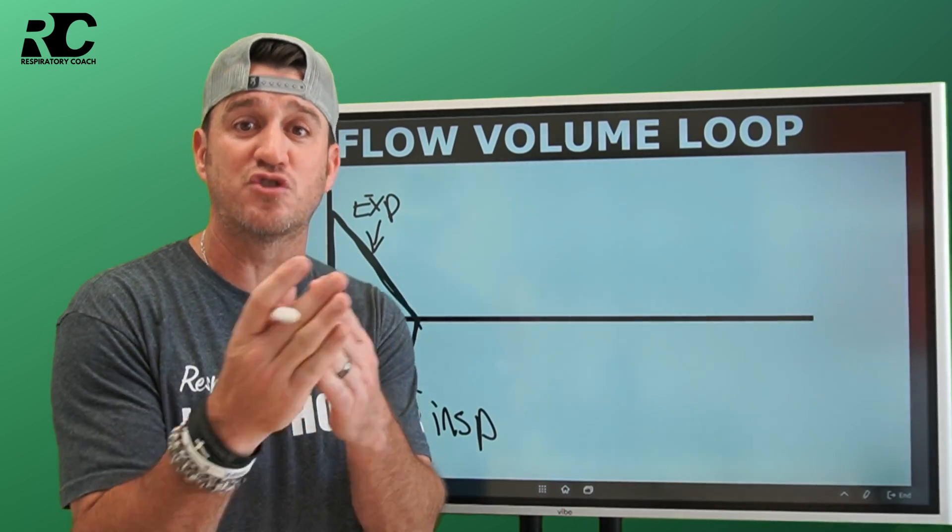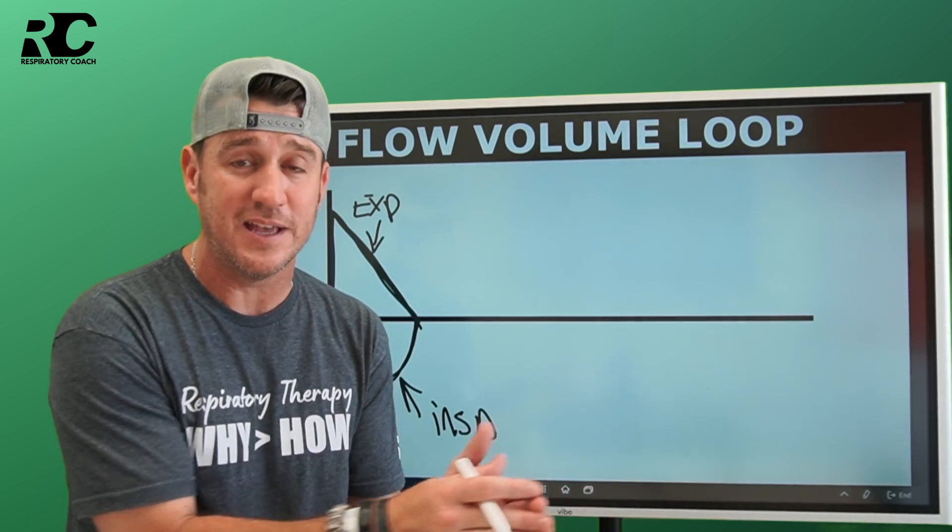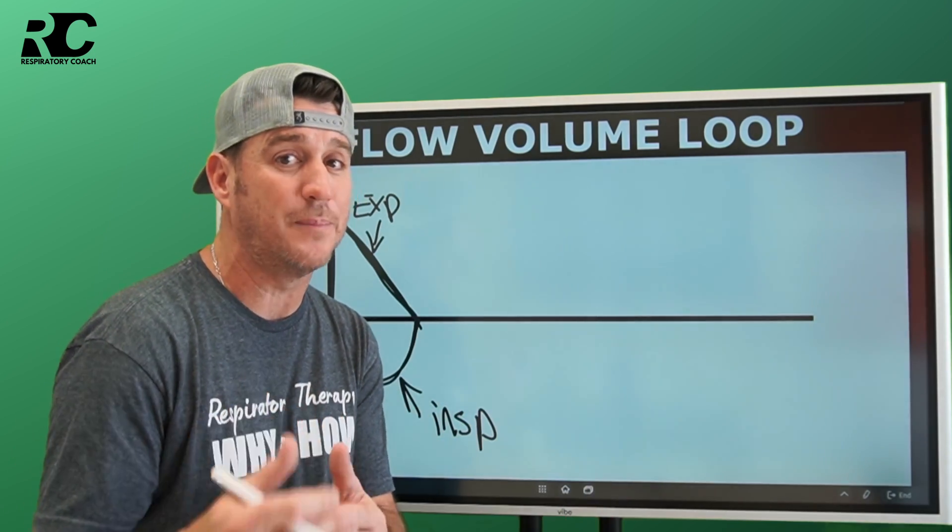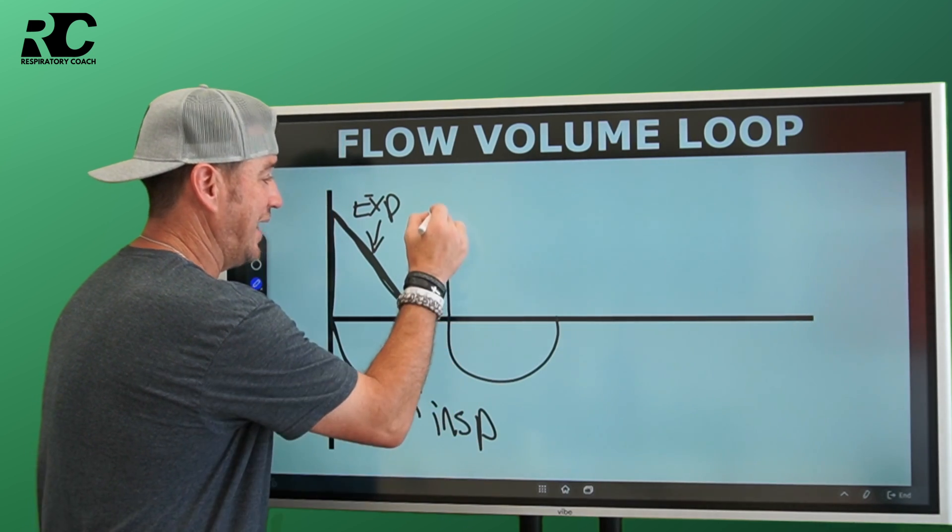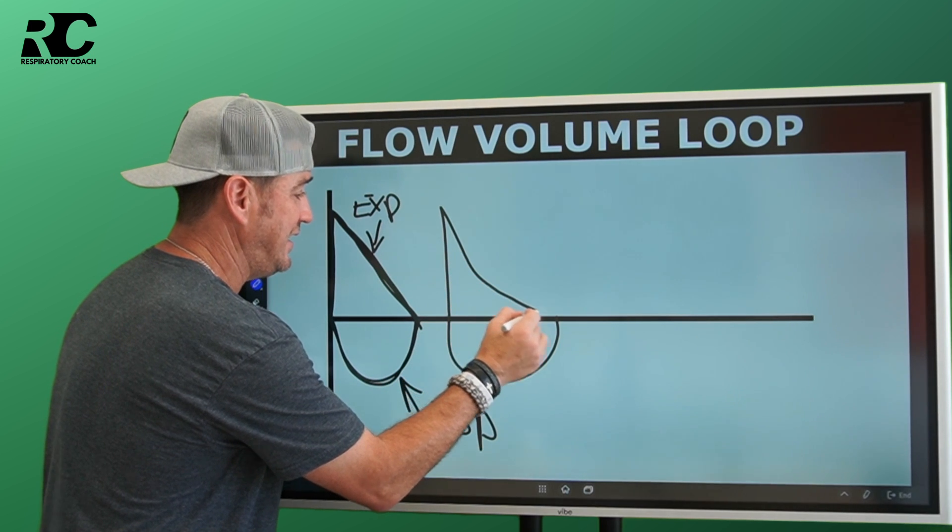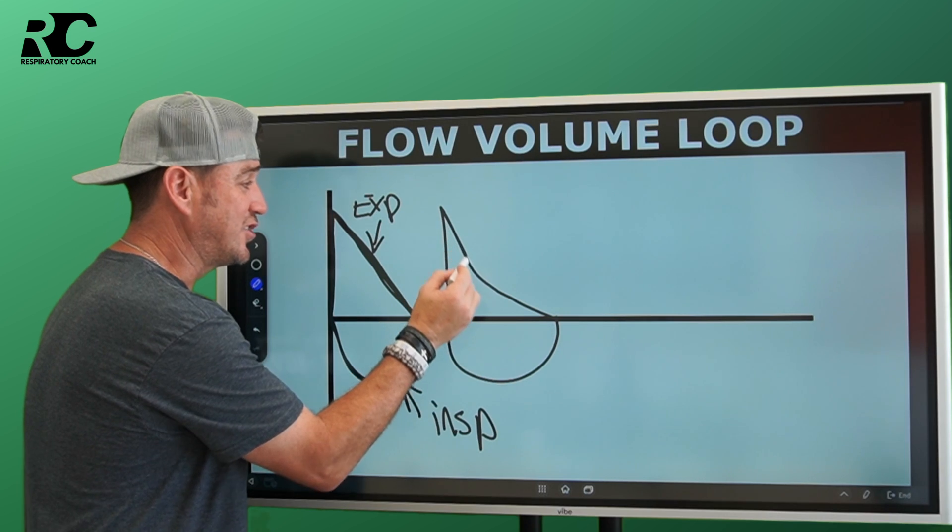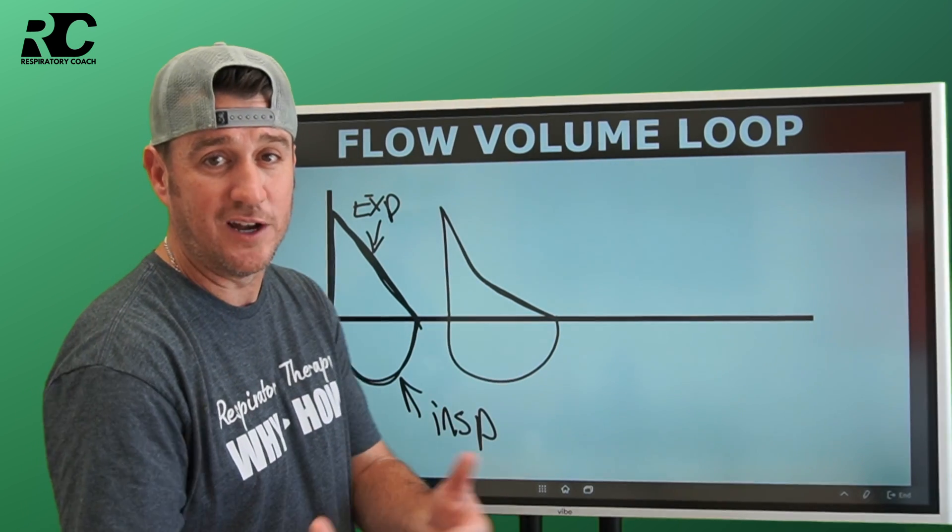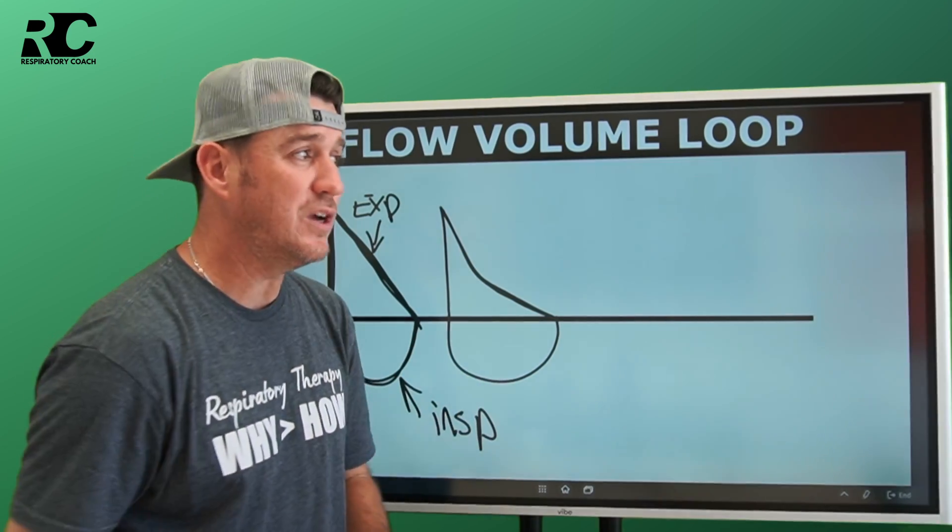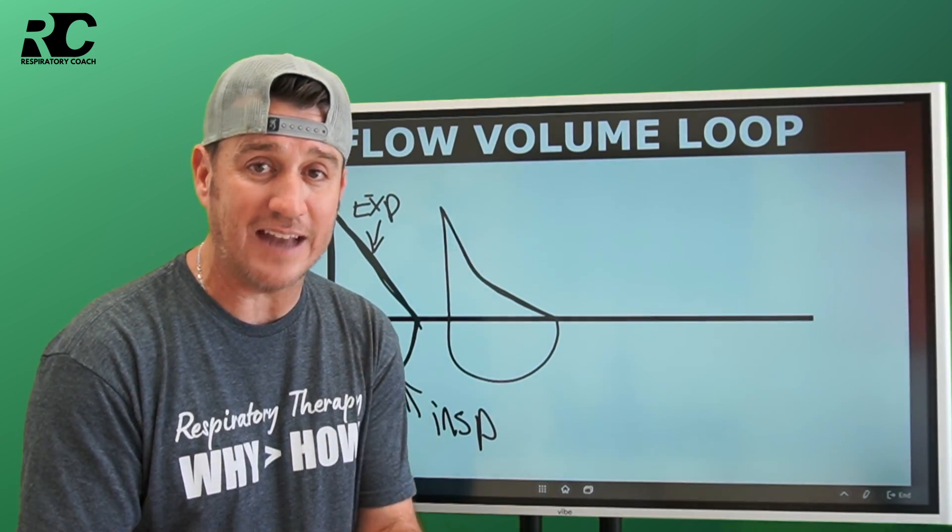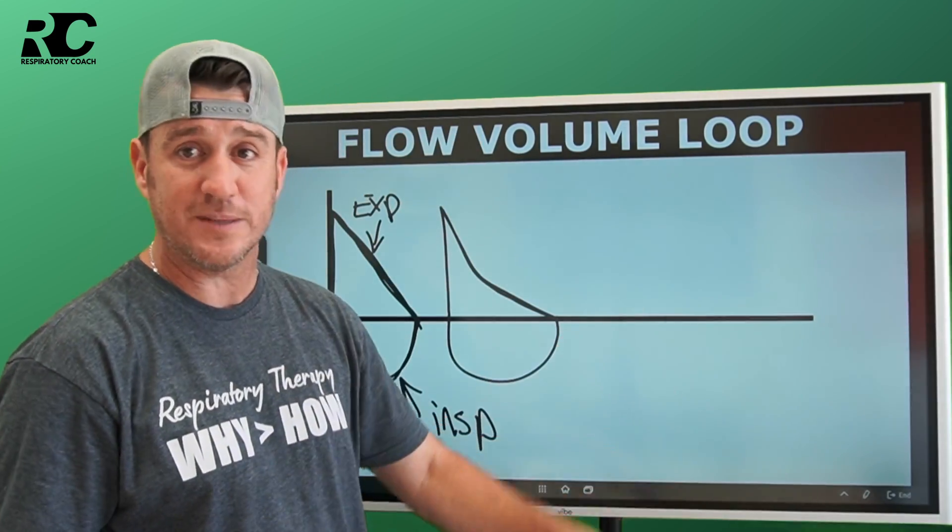When we think about an obstructive lung disease process, any of the C-BABES, then we are expecting to see something like this. Breath comes in, they blast it out, and then we see something like that. You see, this scoop right here, I like to call it a scoop in the loop. If you see a scoop in the loop, then what you know is that you are looking at an obstructive disease process.